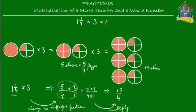You get the improper fraction 15 fourths, which is 15 slices or 15 fourths pizzas. But we are looking for a mixed number, because the number we started with — 1 and a quarter — was a mixed number. So our answer should also be in the format of a mixed number, not an improper fraction. We need to change 15 fourths back to a mixed number. If you look carefully, what you actually have is 3 whole pizzas. Let me show you — I'm going to take each pizza and make it whole.